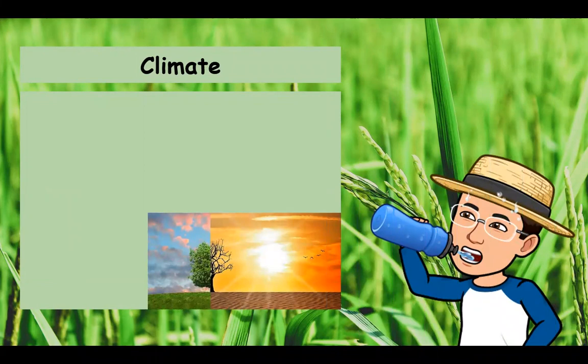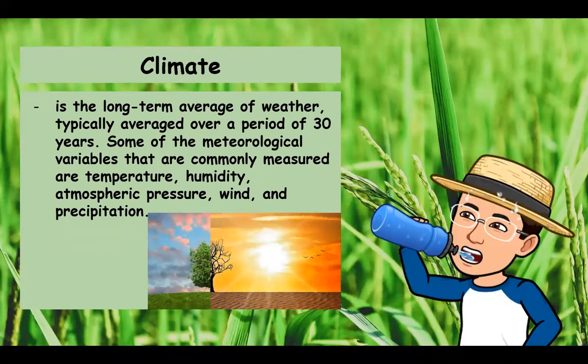The next and last factor that affects the growth of plants is climate. Climate is a long-term average of weather, typically averaged over a period of 30 years. Meteorological variables commonly measured include temperature, humidity, atmospheric pressure, wind, and precipitation. Climate is a very important factor in the survival of plants — it plays a large part in determining the kind and number of plants that an area can support, and also influences the growth form of plants.